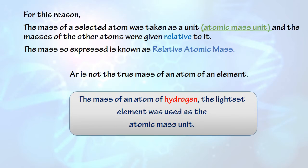For this reason, the real mass of elements and compounds are going to be compared to another small unit. In chemistry, this unit is called atomic mass unit. Masses of elements and compounds are going to be stated relative to this small unit. This is called relative atomic mass, and relative atomic mass is not the true mass of that atom or element.